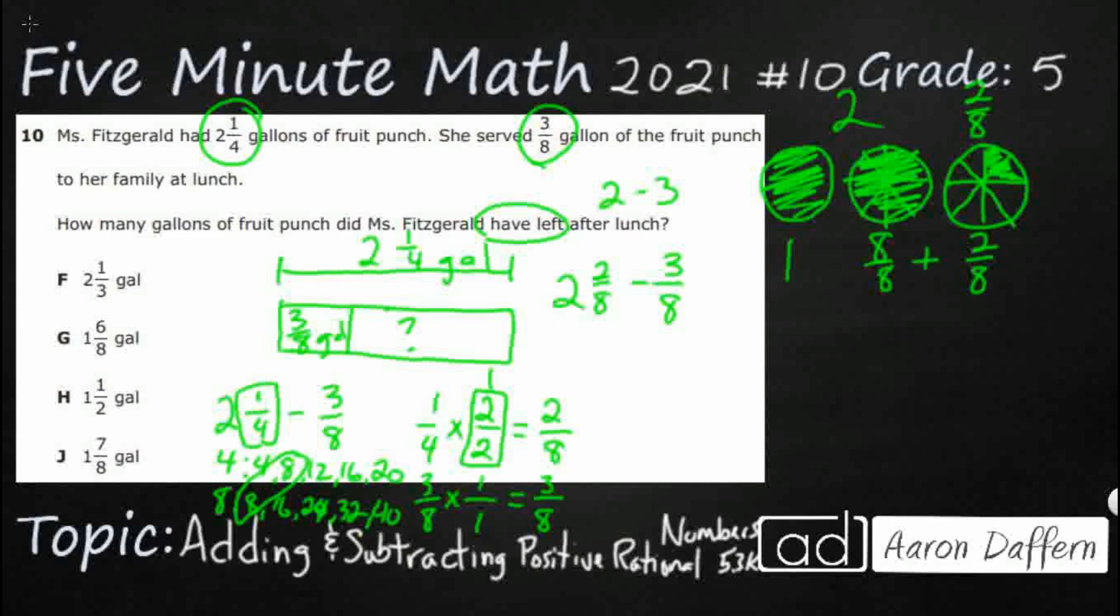So if I bring these two together now, I've got 1 and 10/8. Now it looks weird, 1 and 10/8. But 1 and 10/8 is the same as 2 and 2/8. You saw how I just took one of my wholes and broke it up into 8/8. But now I can subtract.